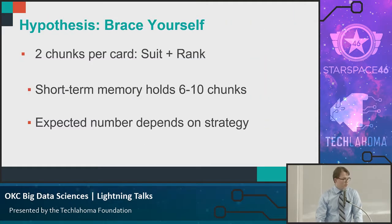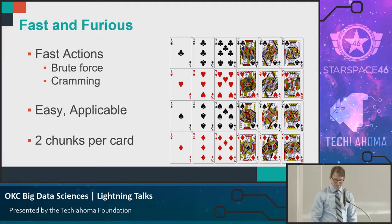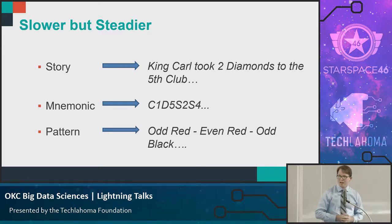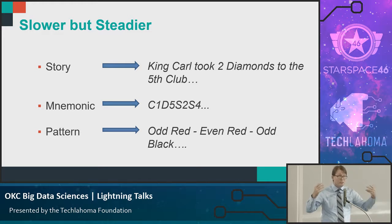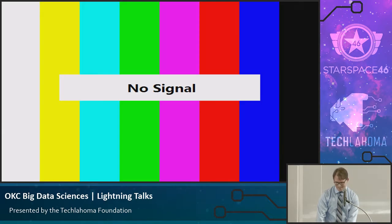How did we do? I expect we might not do too great. There are two chunks of information per card — suit and rank — and our short-term memories don't hold very much: six to ten pieces of information tops, so that's like three to five cards. How we did probably depends on our strategy, whether we crammed in a fast and furious way or tried a slower, steadier approach — like a story, a little pattern, a little mnemonic. Let's read the cards off in order: three of diamonds, then the seven of clubs.